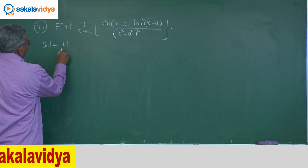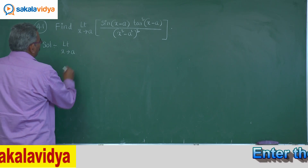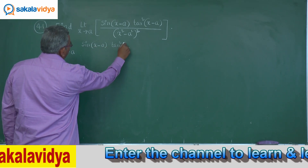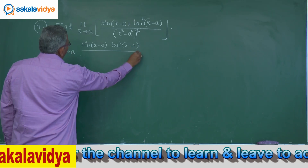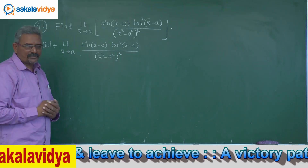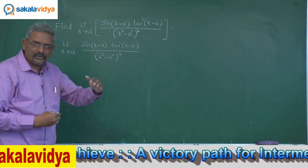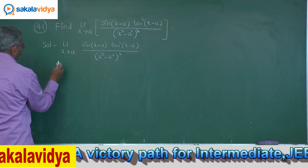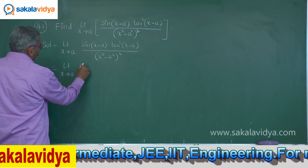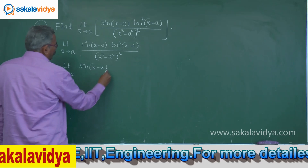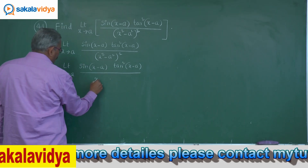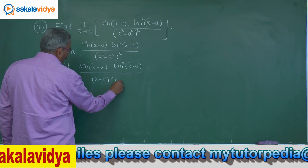Solution follows. The limit x approaches to a of sin(x minus a) and tan square of (x minus a) by x square minus a square, whole square. We have already discussed the factors of x square minus a square: that is (x plus a) into (x minus a). So the denominator can be written as the limit x approaches to a of sin(x minus a) multiplied by tan square(x minus a), divided by (x plus a) into (x minus a), whole square.